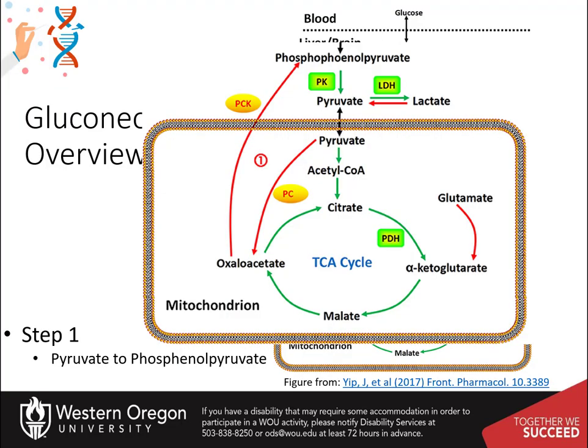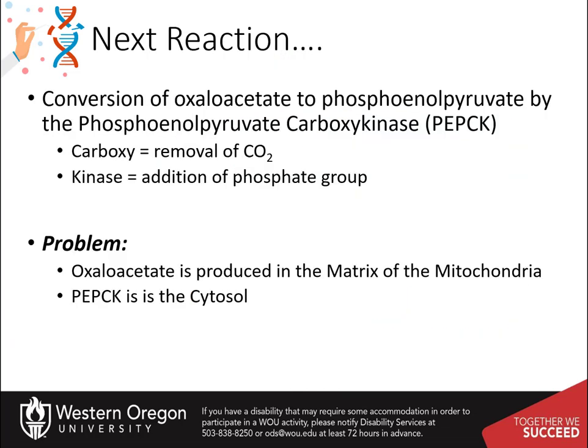In the last section, we discussed the pyruvate carboxylase enzyme reaction mechanism in the formation of oxaloacetate from pyruvate. This intermediate is required to generate phosphoenolpyruvate in a cytosolic reaction mediated by the phosphoenolpyruvate carboxykinase enzyme, PEPCK, which mediates the removal of carbon dioxide from oxaloacetate followed by phosphorylation to yield phosphoenolpyruvate.